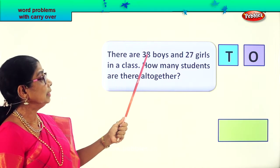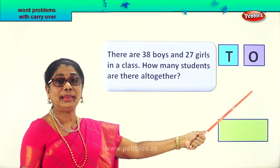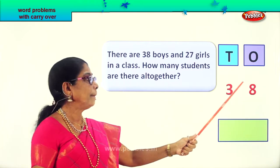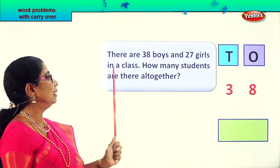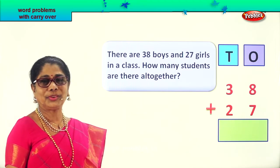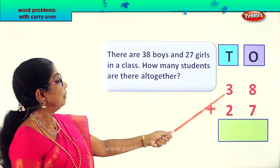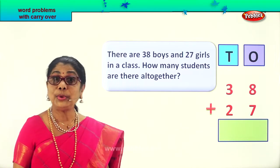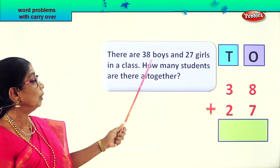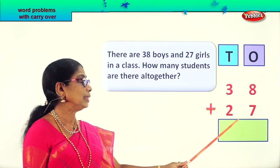There are 38 boys, so we put down 38 under the tens and ones. Then we have 27 girls, so we put plus 27. That gives us 38 plus 27 — 38 boys and 27 girls. Now we're going to add them. The number of boys in the class is 38, and the number of girls is 27.